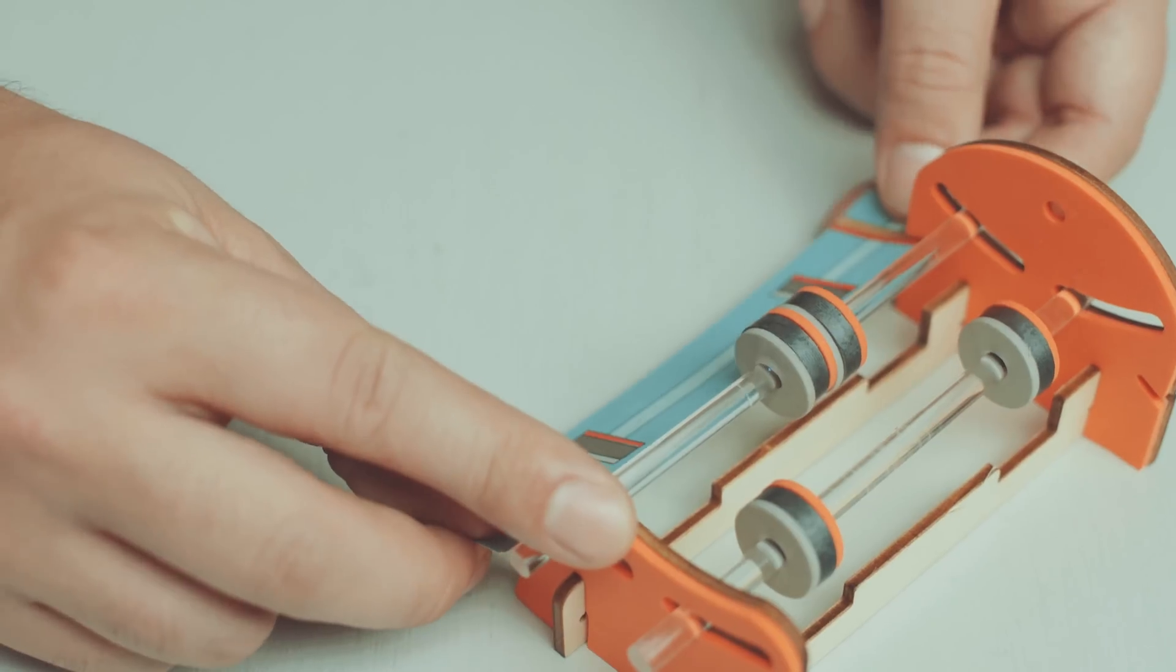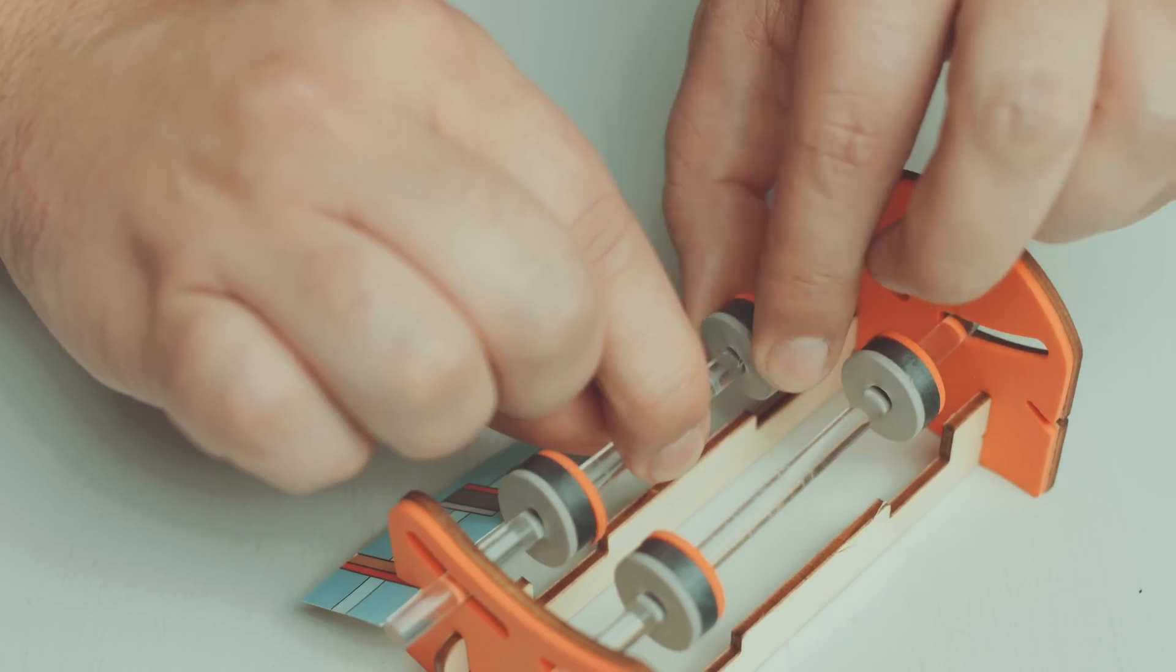Slide your alignment guide into the slots on the side of the frame. Space out the magnets so that they line up with the guide.